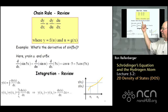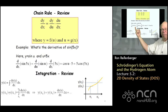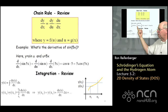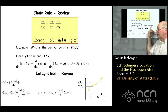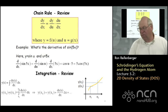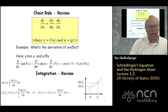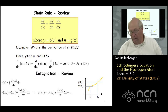For instance, what's the derivative of sine of 5x? In this case y equals sine of u and u equals 5x, so the derivative of sine of 5x with respect to x is the derivative of sine u with respect to u times the derivative of 5x with respect to x, which is just 5 times the cosine of 5x. This formalism is going to be used in this lecture, and I just wanted to remind you of it to start with.